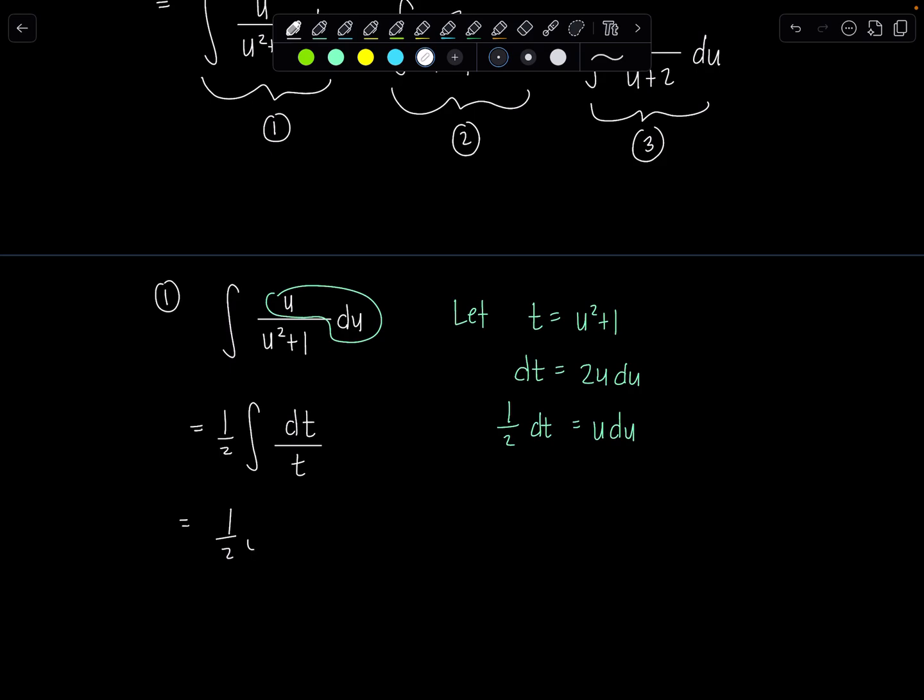So this is one half natural log absolute value of t plus c1 because this is the constant from my first little baby integral. And then let's go back. Let's replace t with u squared plus 1. But since u squared plus 1 isn't going to be negative I'm just going to switch to parentheses. I don't have to keep those absolute value bars. All right. Very good.